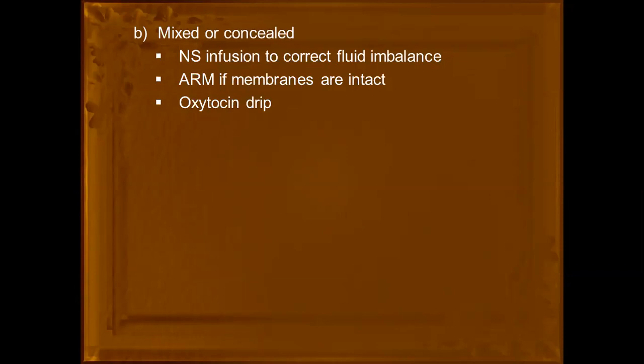In summary, abruptio placenta is the premature separation of the placenta from its normal site. There are three types: revealed (blood visible outside), concealed (blood collected behind placental site, not visible), and mixed (some blood behind placenta, some flowing outside). We discussed signs and symptoms for each type and the treatment, which is induction of labour whether the patient is in labour or not. Thank you.